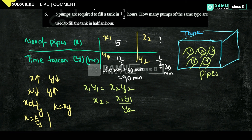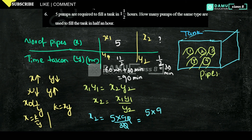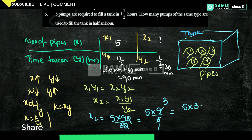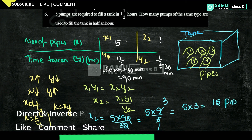So X2 = 5 × 90 / 30. Cancelling the zeros, we get 5 × 9 / 3 = 5 × 3 = 15. That is 15 pipes. So the answer is 15 pipes. Alternatively, you can express one and a half hours as 3/2.